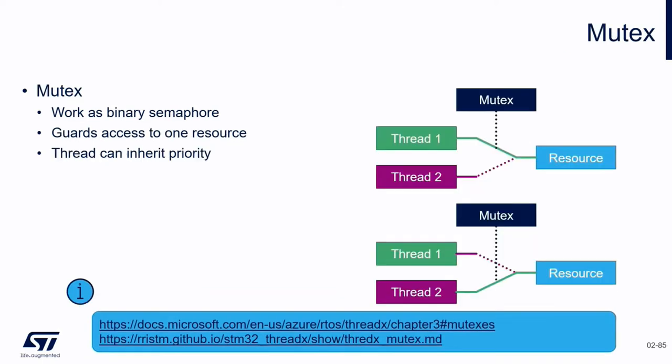We now go through the mutex, which means mutual exclusion. Mutexes are useful to indicate the availability of a resource and to control access to a critical resource. They are similar to binary semaphores, but the main difference is that a mutex is typically closed and opened within the same thread.